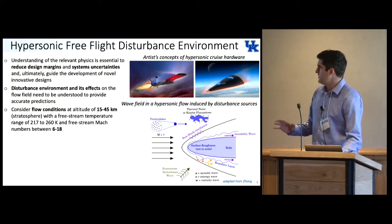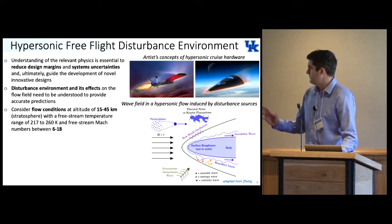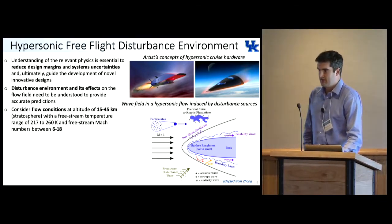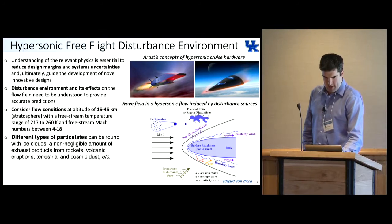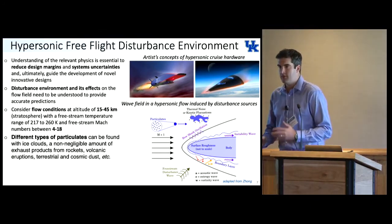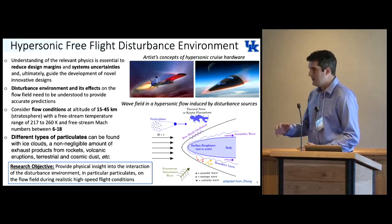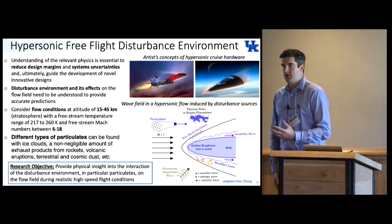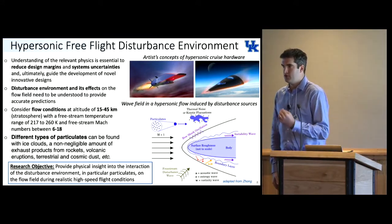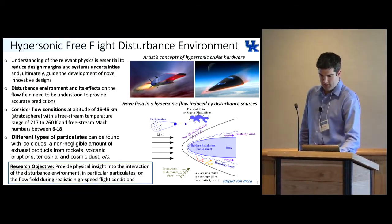One of the major things that we still don't have a great understanding of is the disturbance environment in hypersonic flight and its effects on the flow field. We're considering flow conditions at an altitude of 15 to 45 kilometers in the stratosphere and Mach numbers between 6 and 18. At this altitude, there's different types of particulate in the air coming from different sources. There's one theory that these particulates in the Earth's atmosphere could be the triggers for transition of hypersonic boundary layers.